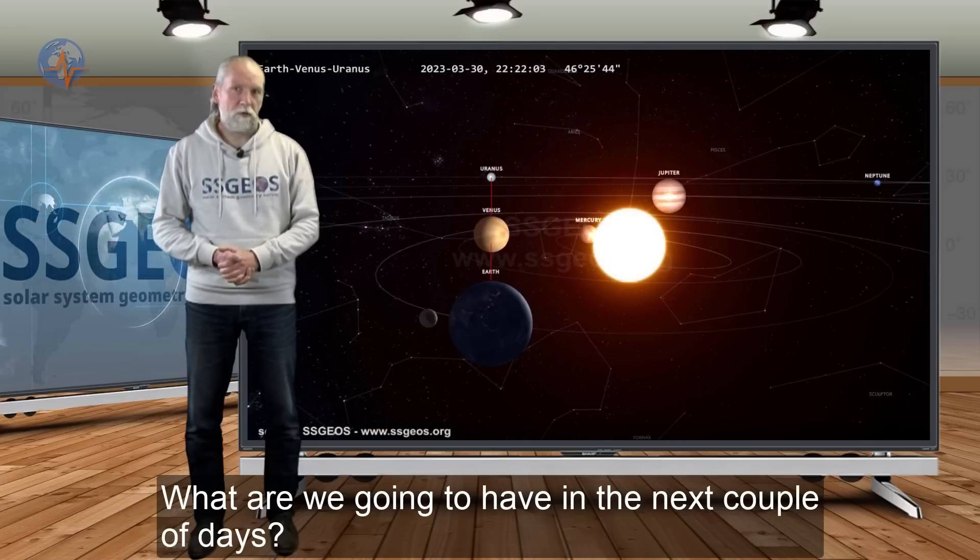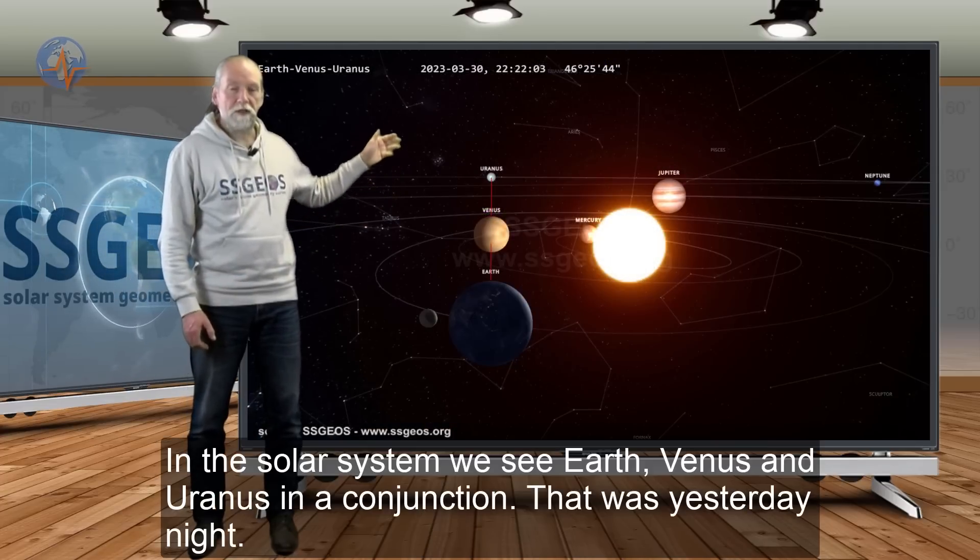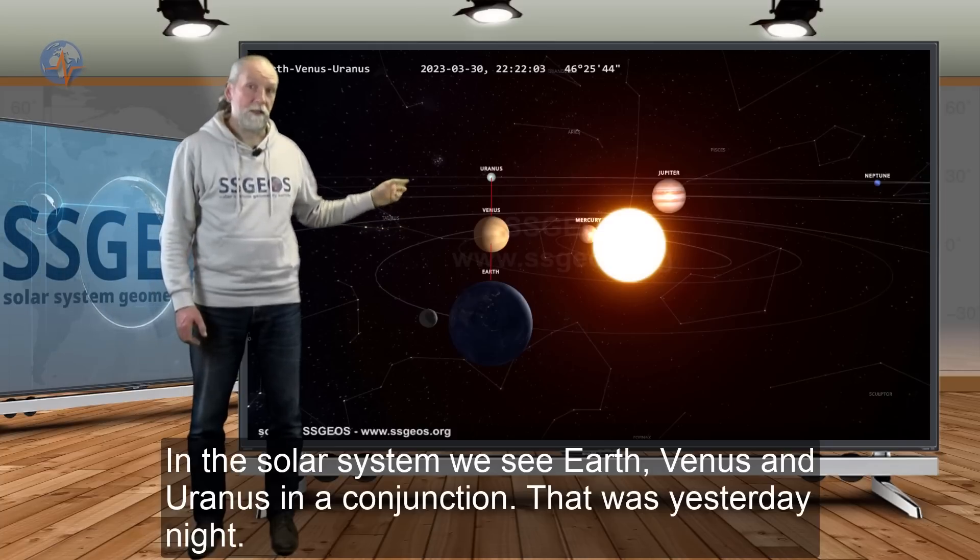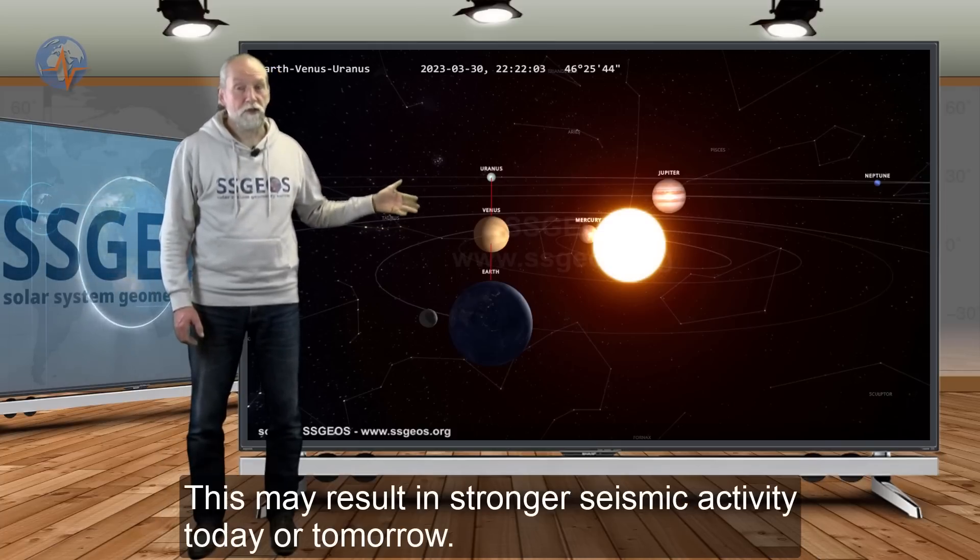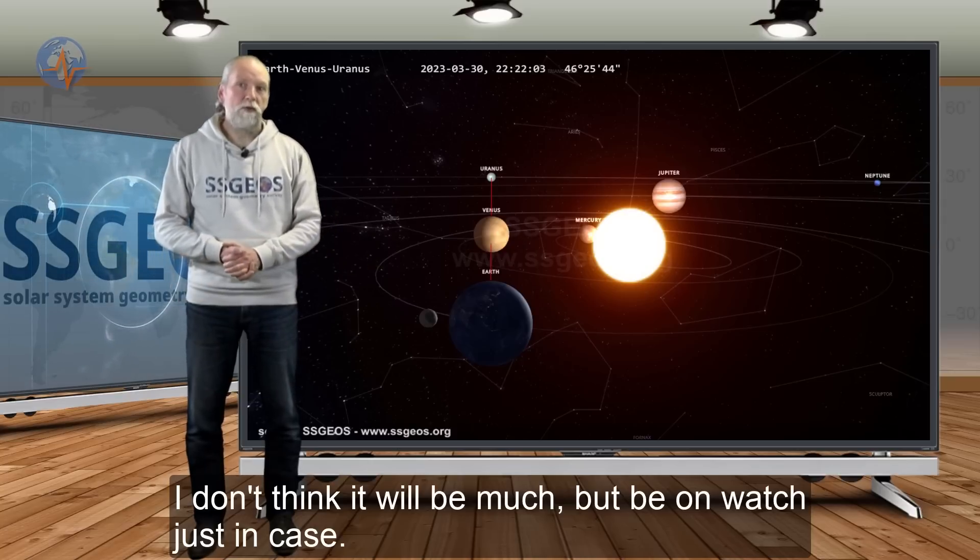So what are we going to have in the next couple of days? As we look at the solar system, we see Earth, Venus, and Uranus in a conjunction that was yesterday night. This may result in some stronger seismic activity, possibly today or tomorrow. To be honest, I don't think it's going to be much, but be on watch just in case.